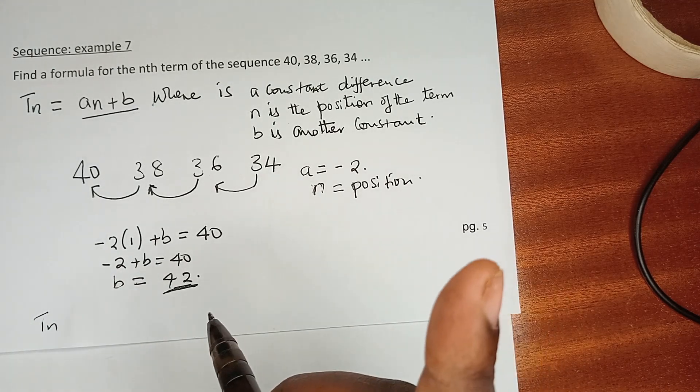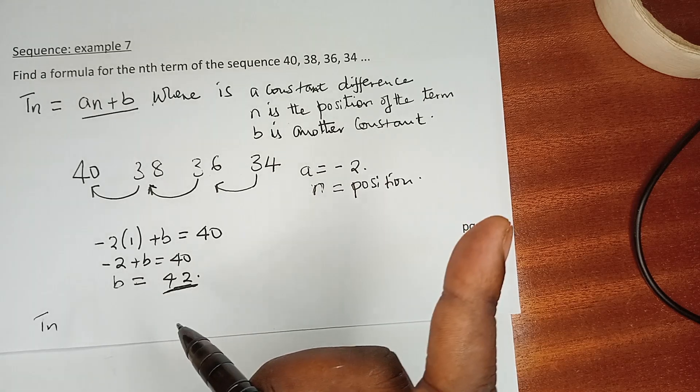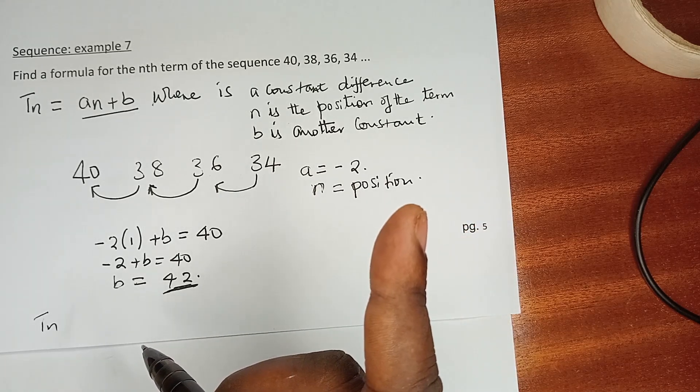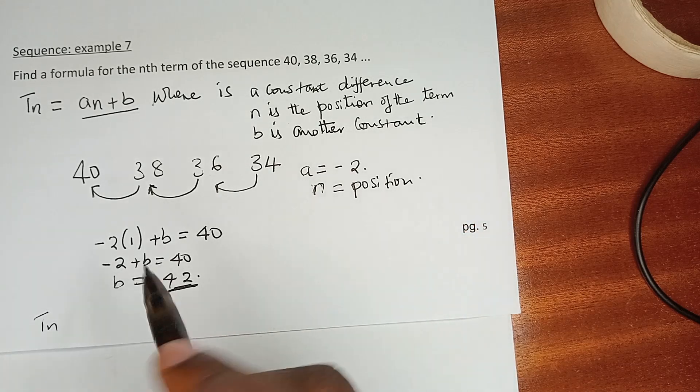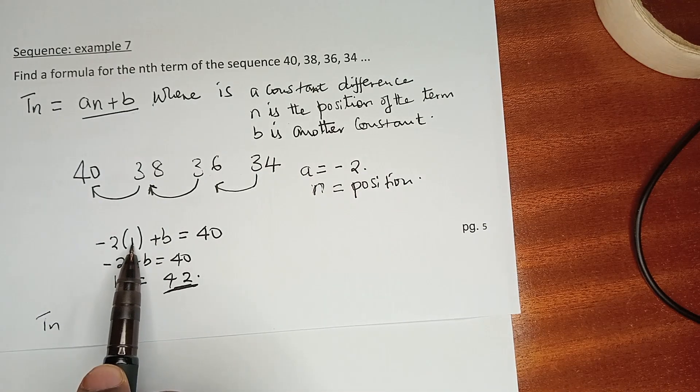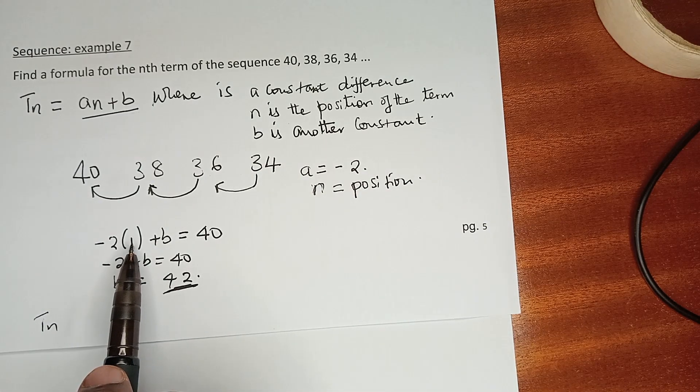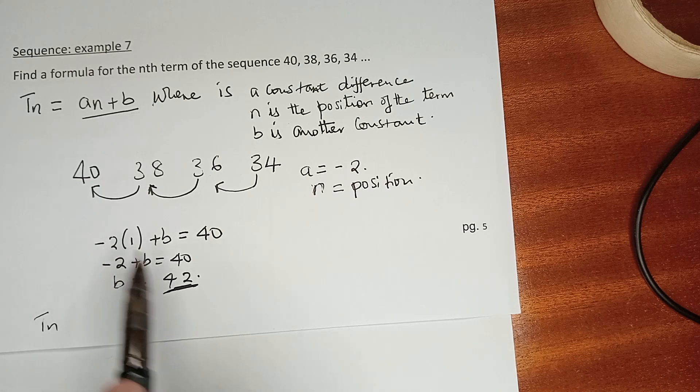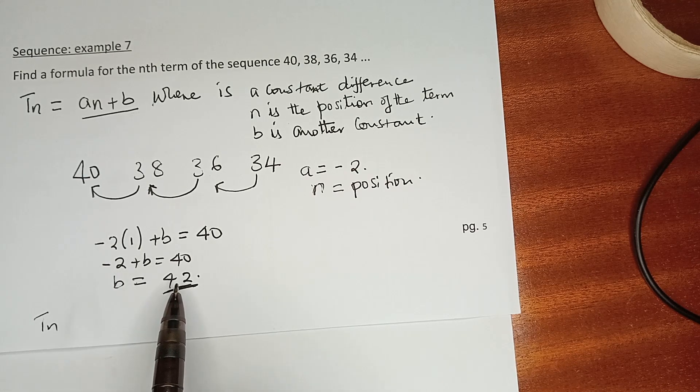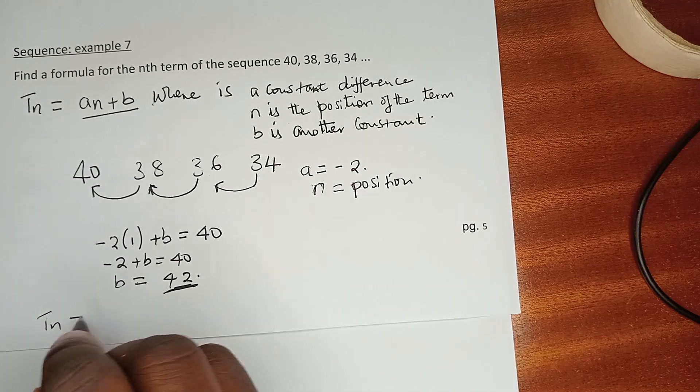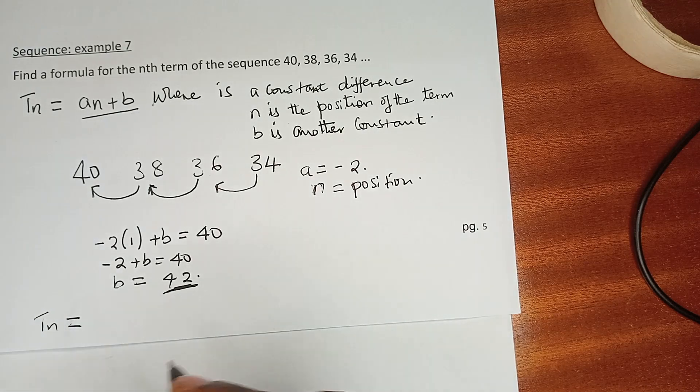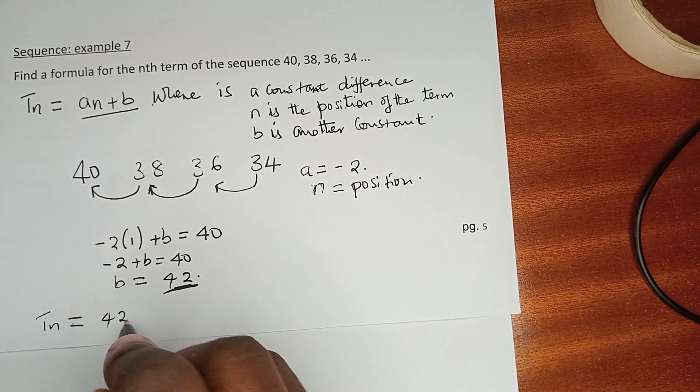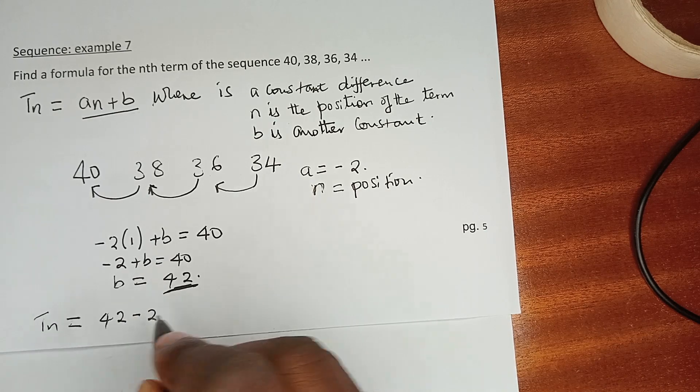the formula now becomes term n, because 42 is a constant, a is the common difference, and n is the position. n will keep changing, -2 is going to maintain—it's not going to change—and 42 is a constant. So the general formula of the nth term is 42 - 2n.